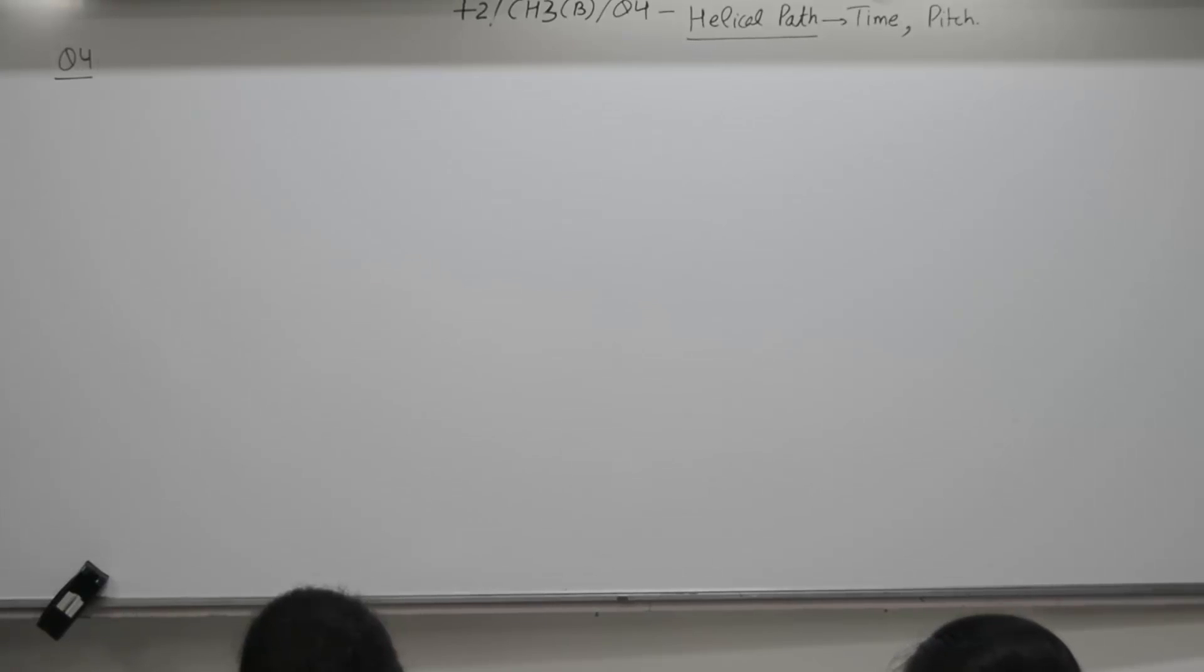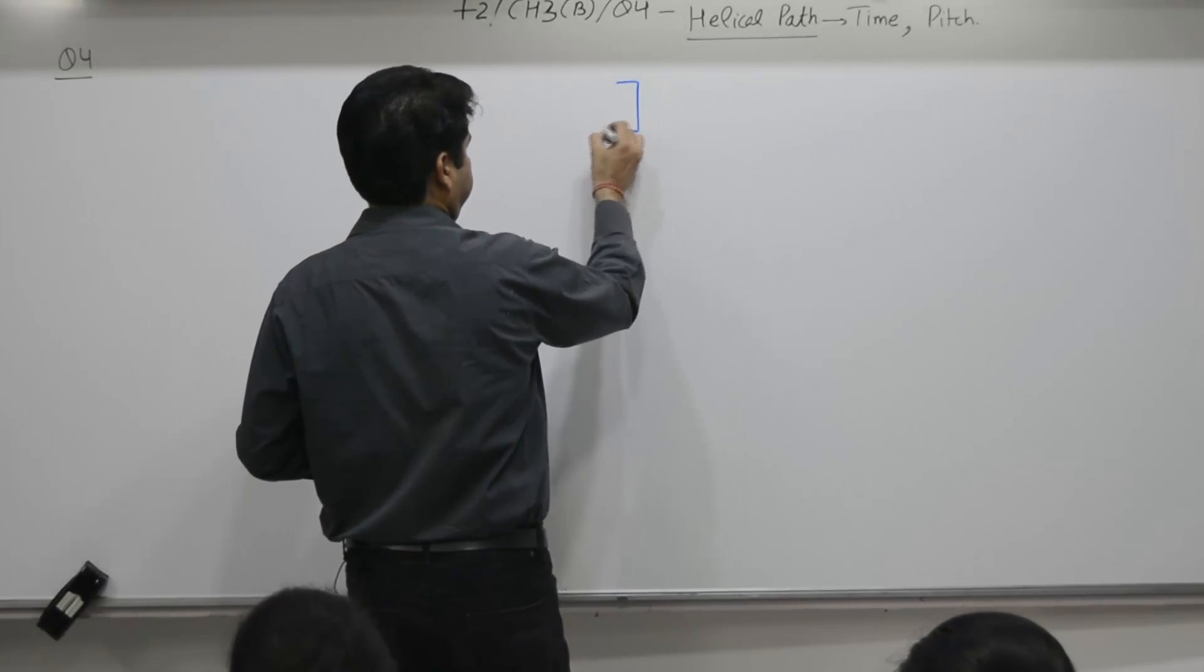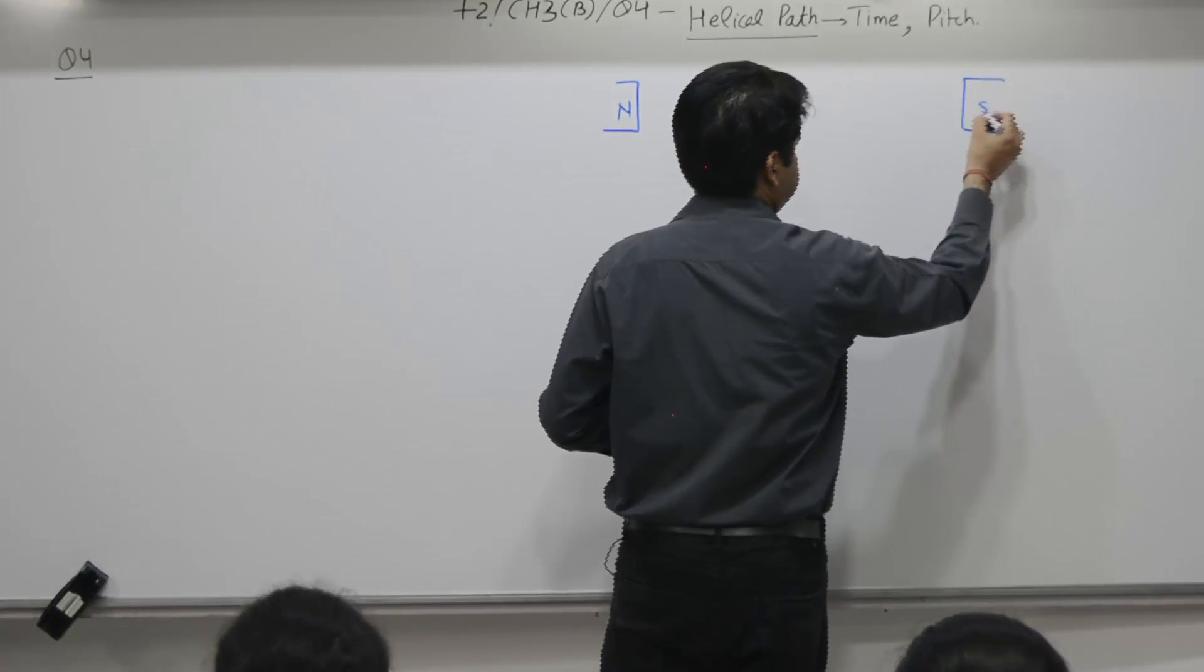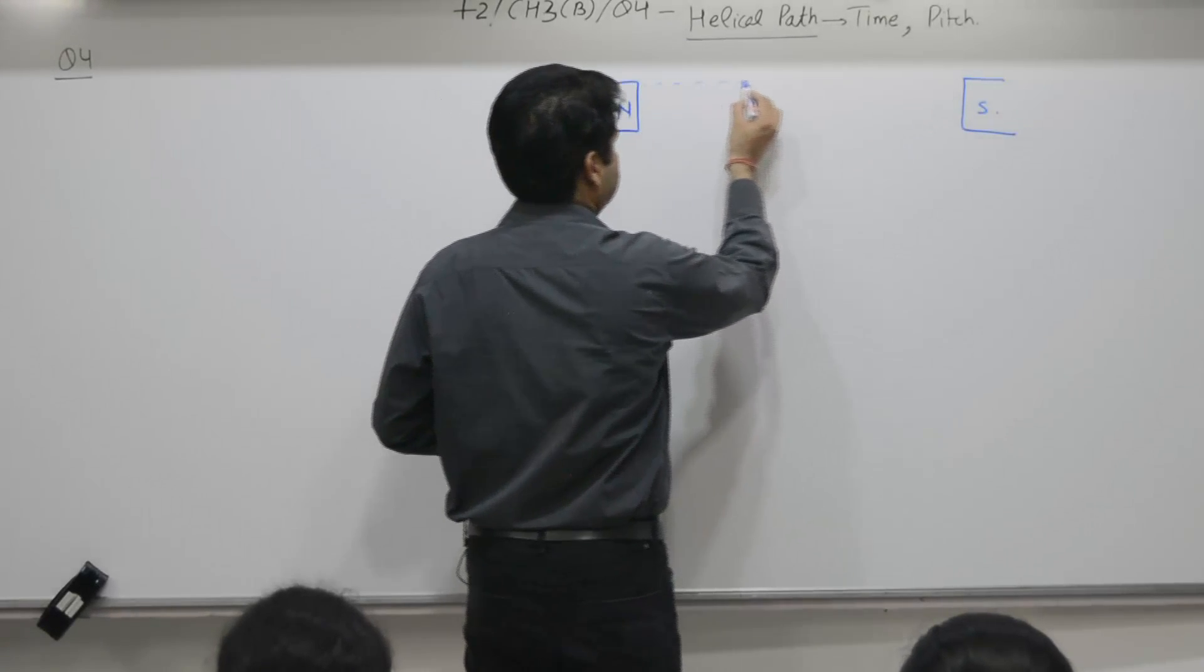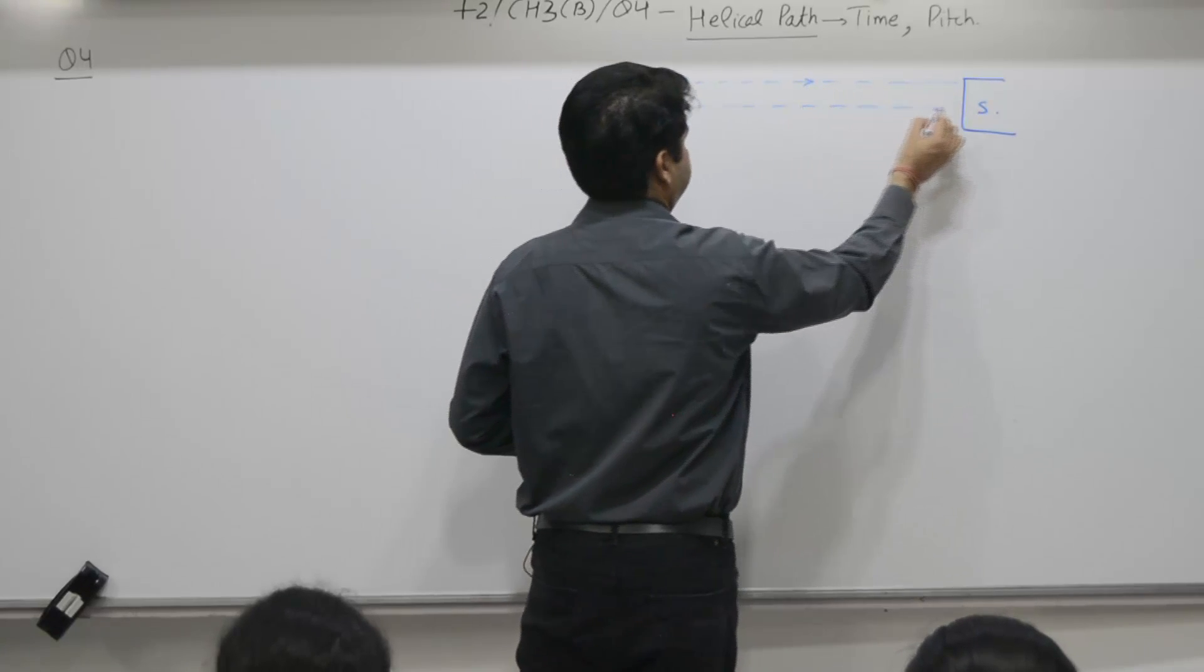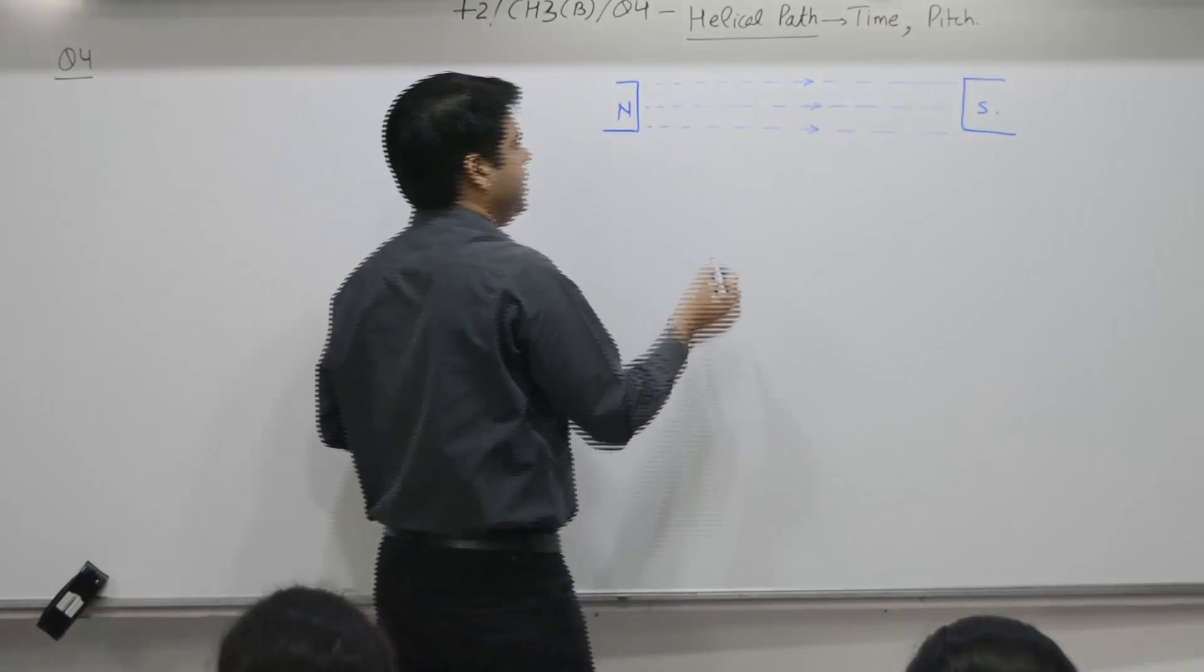There is a magnetic field. First step is that there is a magnetic field. As seen by you, north to south, from left to right or you can say along x axis.